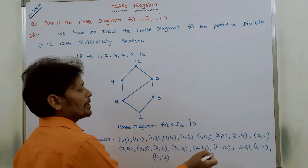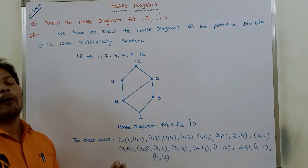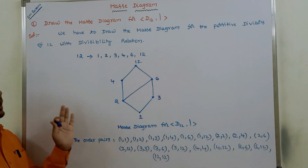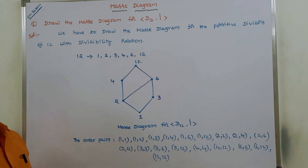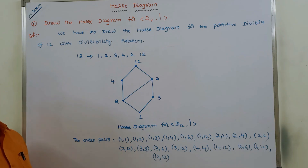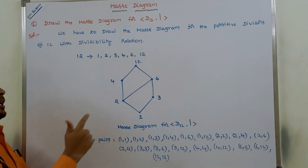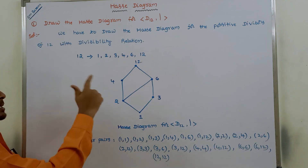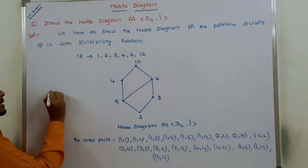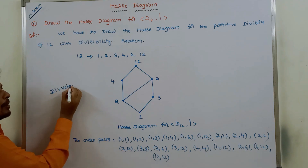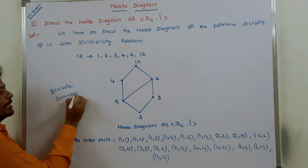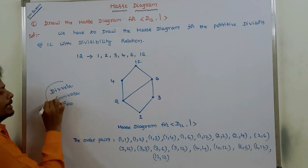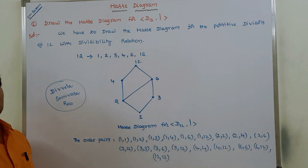There is a divisibility relationship between the two components of each and every ordered pair. In this way, we draw the Hasse Diagram for positive divisors of 12 with the divisibility relation. I hope you are all understanding this video. If so, please click the like button and share this video with your friends and classmates. If you have any doubts, please put them in the comment section and I will try to clarify them. For better understanding of Discrete Mathematics, go to the channel Divvila Srinivasarav and the playlist called Discrete Mathematics, which contains more than 430 videos with detailed examples. Thank you all for watching.